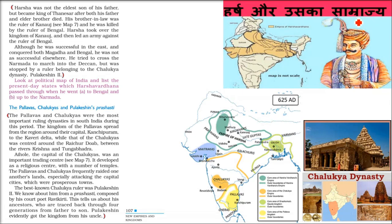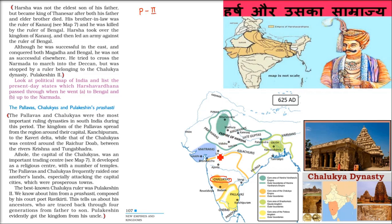We have discussed about Harshvardhan. He tried to enter the area below the Narmada, but the Chalukya king at that time, Pulkeshin II, stopped Harshvardhan.